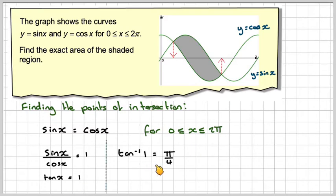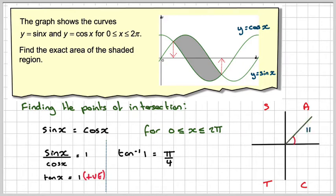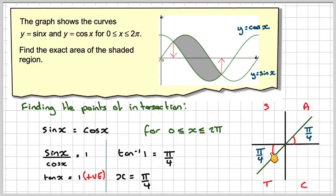tan⁻¹(1) is π/4. Using our CAST diagram, tan is positive in the first quadrant and the third quadrant. Therefore x will be π/4 and π plus π/4, which is 5π/4.